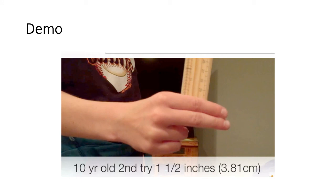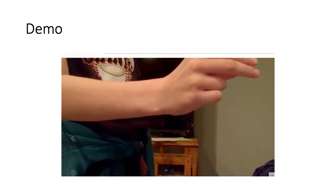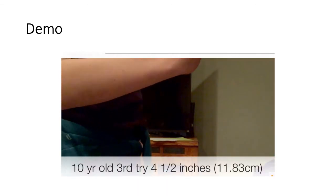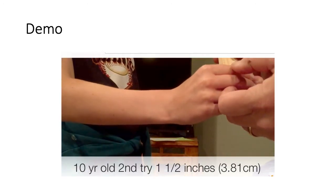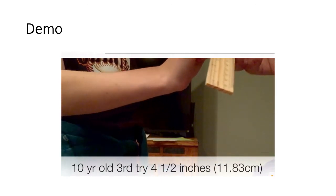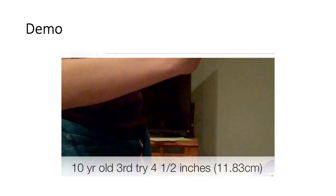Here is the live demo. The ruler is at zero point and then the subject catches it. The second person is holding and the subject is catching and recording values. For example, a 10-year-old girl in the demo got 3.8 centimeters on the first attempt and 11.83 centimeters on the second attempt. You have to calculate 10 values, then record and apply the formula. Try it and tell me your reaction times — I will keep an activity after this lecture.